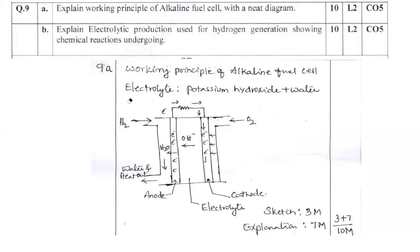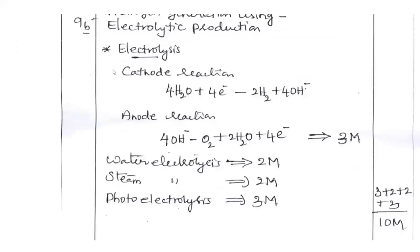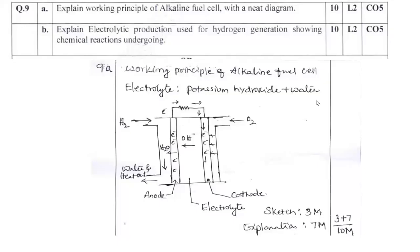Question number 9B. Explain the electrolytic production used for hydrogen generation showing chemical reactions undergoing. Here electrolysis, so you have to write a separate relation. The anodic reaction, cathodic reaction, definitely go for the overall reaction. So this is regarding question number 9B.